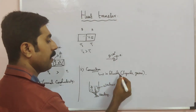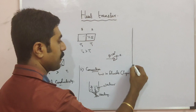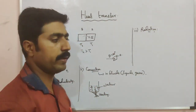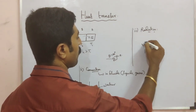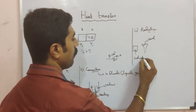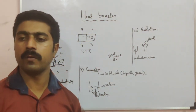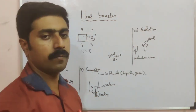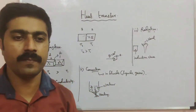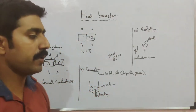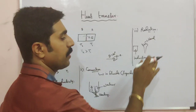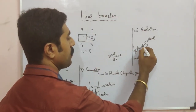So convection occurs in fluids — specifically in liquids and gases. The third mode of heat transfer is radiation. For example, consider an induction stove. If you keep your hand at some finite distance from the stove without touching it, you can feel the heat energy. The heat energy liberated by the induction stove reaches your hand through radiation.